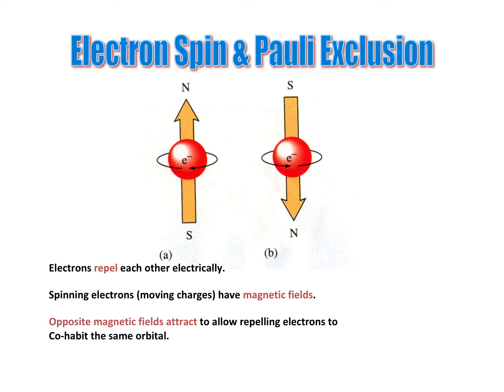How can you fit two electrons in one orbital? Electrons are all negative and like charges repel — so how do you put two negative things close together? The reason is that electrons are actually spinning, and when a charged particle spins it generates a magnetic field. If one electron is spinning clockwise, north is at the top and south at the bottom. An electron spinning anti-clockwise creates the opposite magnetic field. So two electrons can share an orbital only if they spin in opposite directions, creating opposite magnetic poles that counteract the charge repulsion.